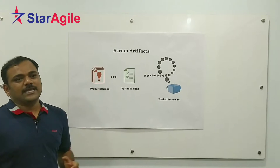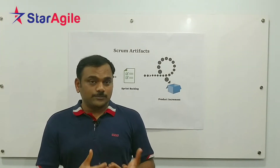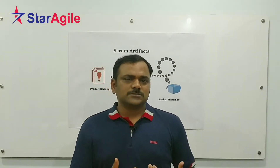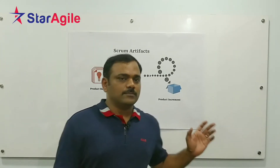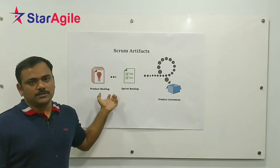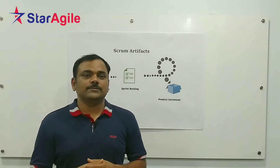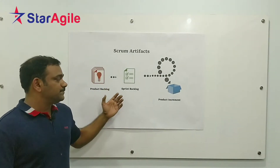Product Backlog is a live artifact that can change anytime in the sprint, anytime in the project — it can change throughout the project. As the project goes on and the Product Owner is interacting with stakeholders on the business side, items can be added, removed, or reprioritized from the Product Backlog. That's why Product Backlog is a live artifact and it can change anytime in the product.